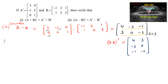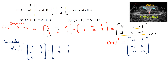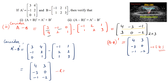Now consider A transpose minus B transpose. A transpose is [3, 4; -1, 2; 0, 1] and B transpose is [-1, 1; 2, 2; 1, 3]. Subtracting: 3 - (-1) = 4, 4 - 1 = 3, -1 - 2 = -3, 2 - 2 = 0, 0 - 1 = -1, 1 - 3 = -2. Result is [4, 3; -3, 0; -1, -2]. We observe that (A-B)^T on the LHS and A^T - B^T on the RHS are equal. Therefore (A-B)^T = A^T - B^T.